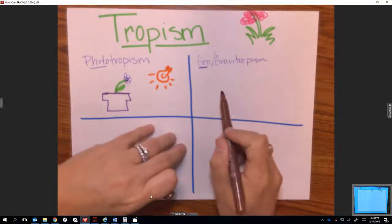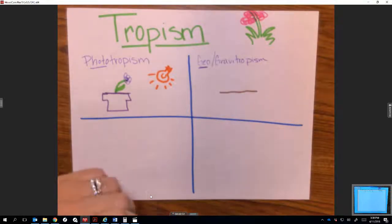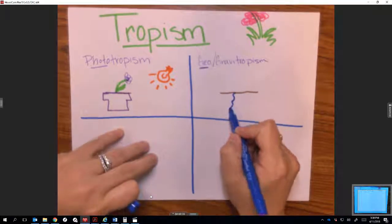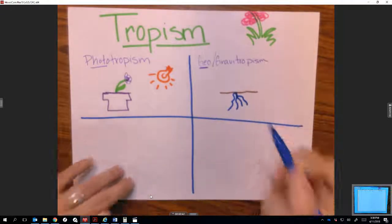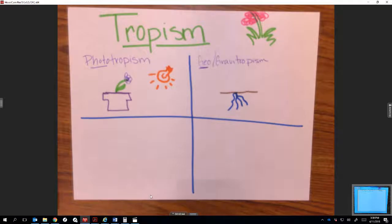If this is my soil, then the roots of my plant are going to grow down towards gravity. When a seed, when roots emerge from a seed, they automatically know that they need to grow towards gravity and the roots are pulled down.